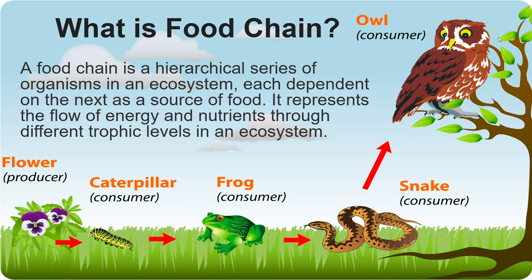What is a food chain? A food chain is a hierarchical series of organisms in an ecosystem, each dependent on the next as a source of food. It represents the flow of energy and nutrients through different trophic levels in an ecosystem.